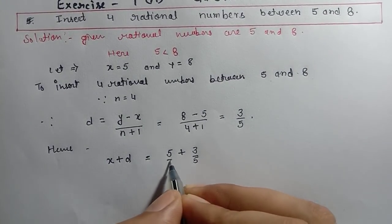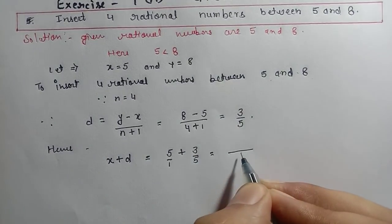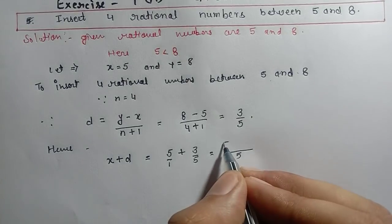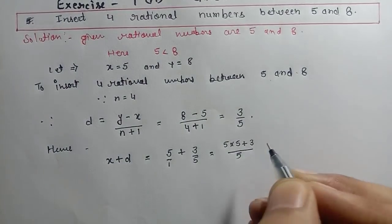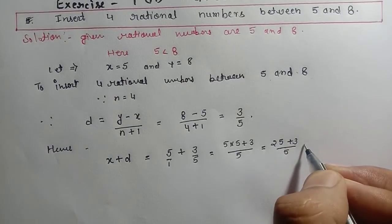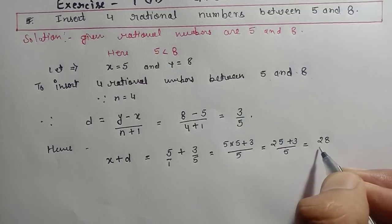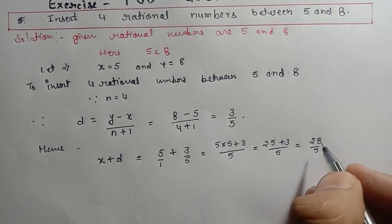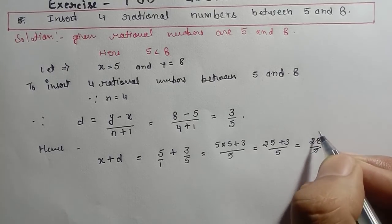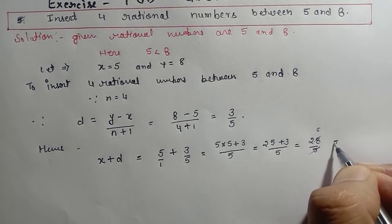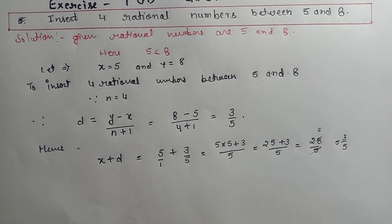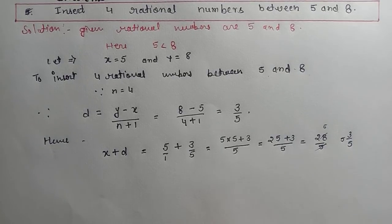Now let's calculate. The denominator we have is 1. Taking LCM of 5 and 1, which is 5. So 5 divided by 1 multiplied by 5, plus 3 — that gives us 25 plus 3 by 5, which equals 28 by 5. If you want to calculate further you can, but I'll leave it as 28/5. In decimal it would change, and we don't want decimal. So the first rational number is 28 by 5.